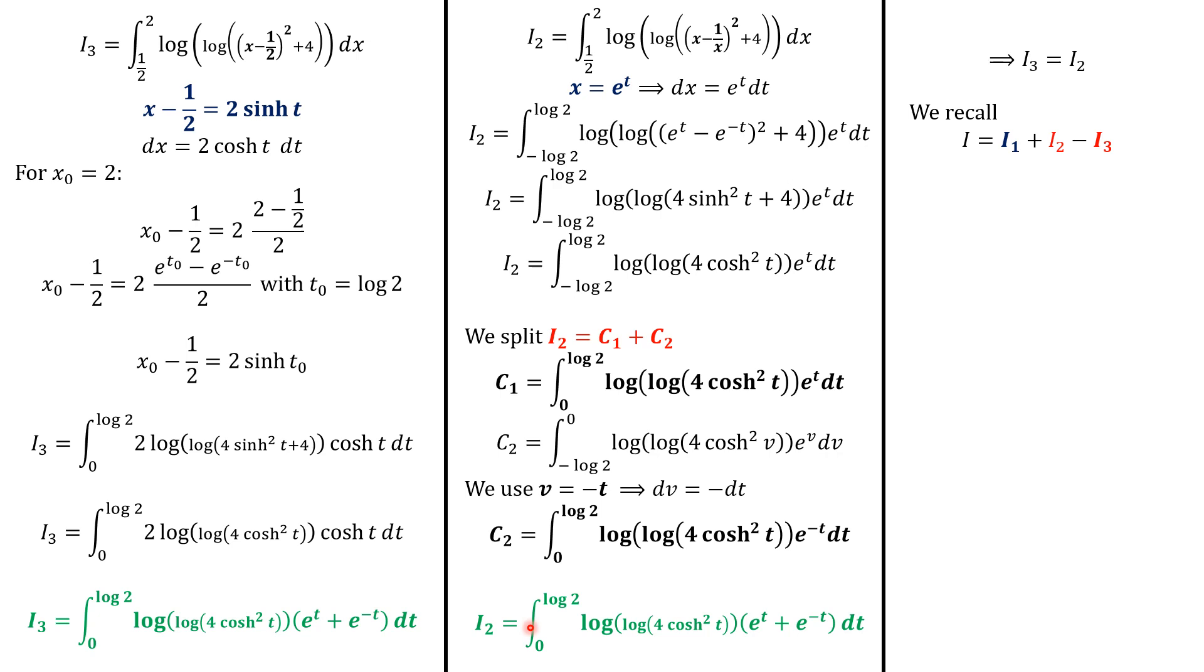And we see that i2 equals i3. But we know that i was i1 plus i2 minus i3. Since i2 equals i3, then i is equal to i1. And then i equals negative 3 over 2 log 2. And this is the answer.